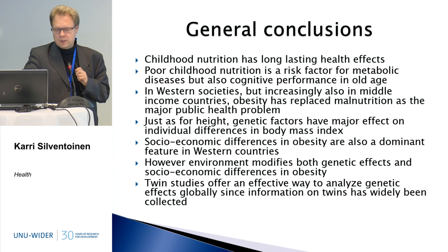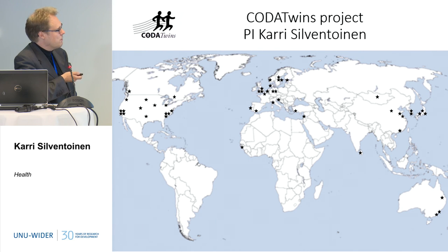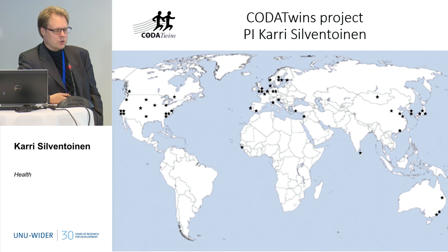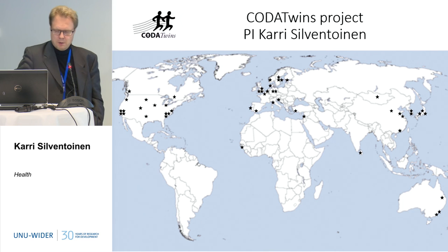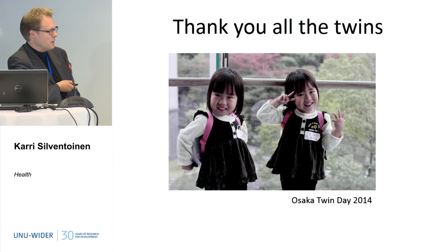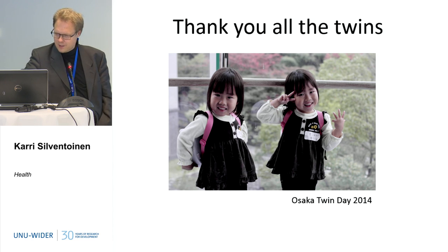This is just to show what information we will get in the future. This is the new CODA Twins project I am heading. We have collected information on about 50 twin cohorts from 22 countries — information about height, BMI, education, and some baseline information — collected here in Helsinki. Hopefully, based on this database, we can get more information about how the macroenvironment modifies genetic and environmental variation in height and body mass index. Thank you very much to all of you and to all the twins — we have about half a million twins in this register. Thank you for listening.